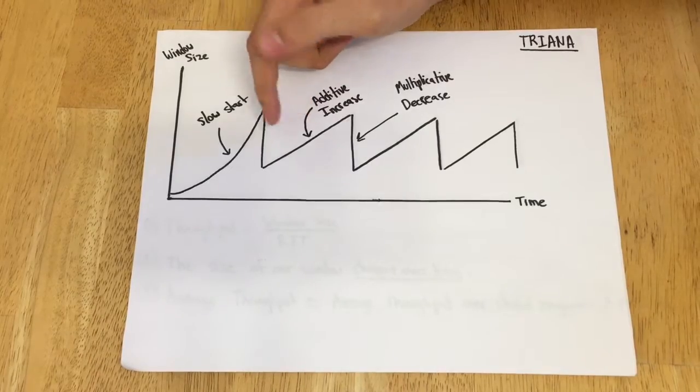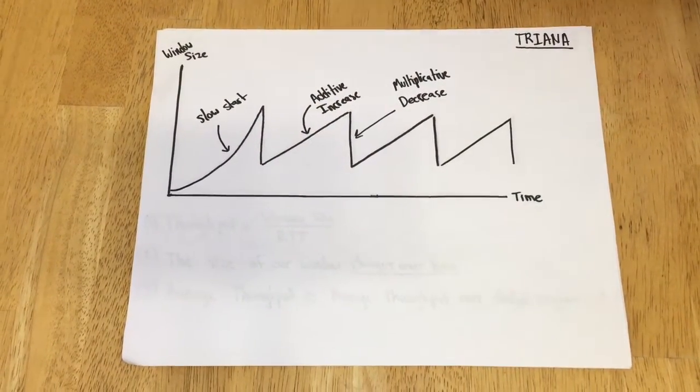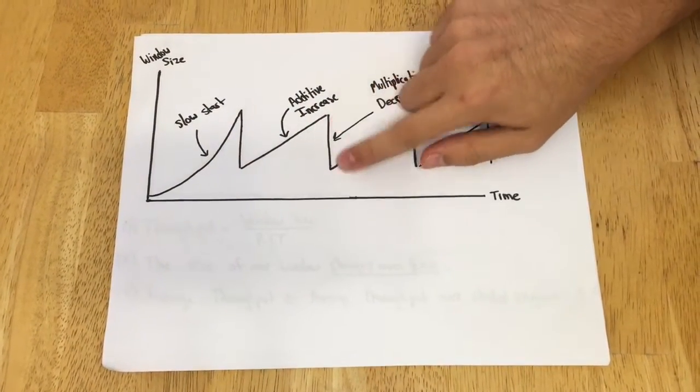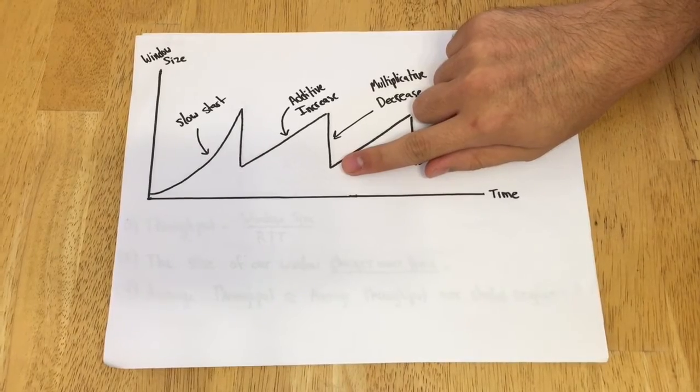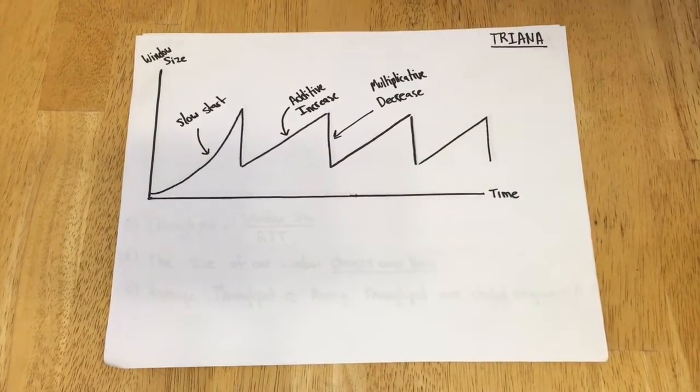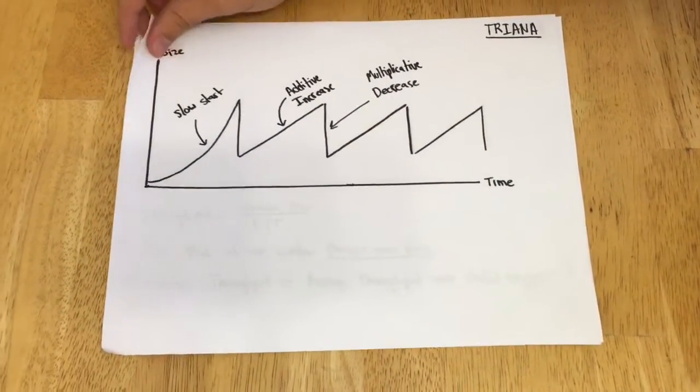Additive increase is this linear growth we see here, meaning packets are being acknowledged successfully and the window size continues to grow at a linear rate. Then lastly, this drop is indicative of multiplicative decrease that happens when a packet is dropped or unacknowledged, causing us to decrease our window size.